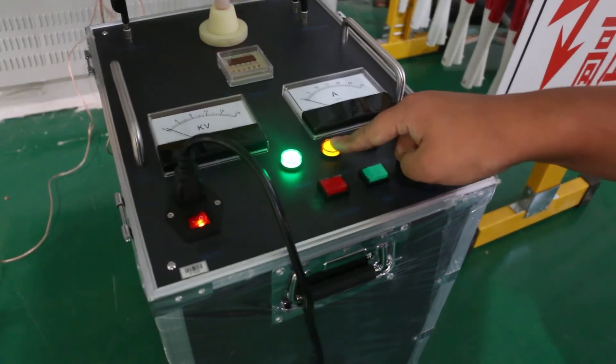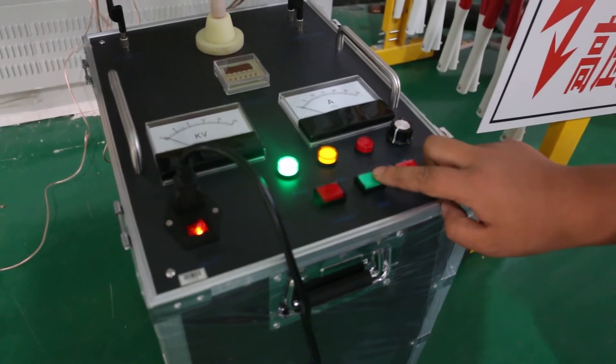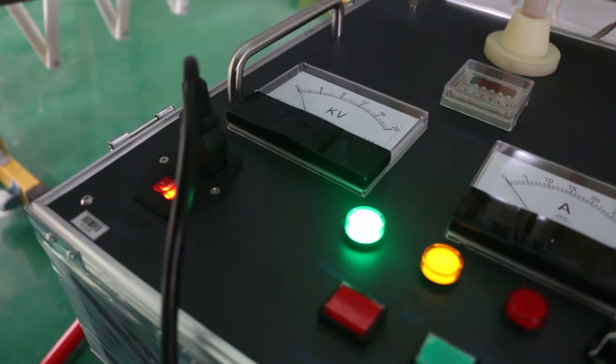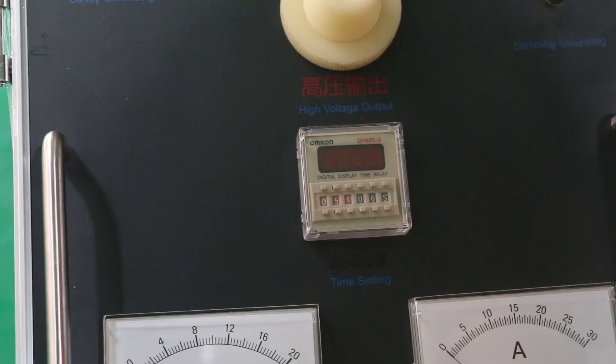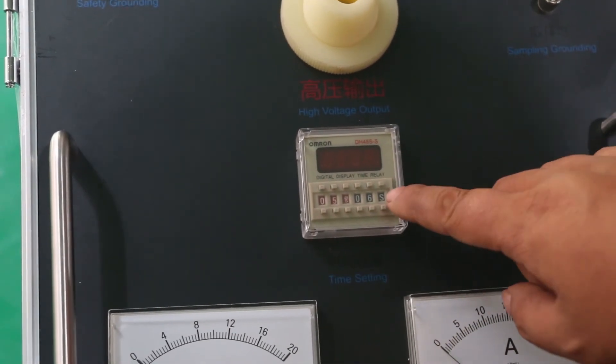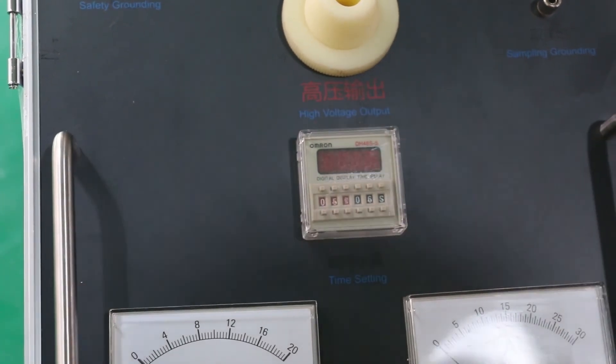When pressing start button, the zero indicator lighting on is required. Voltmeter must go to zero after complete discharging. Time setting must be set before machine turns on, normally without change.